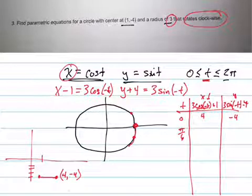So it's creating my circle to go clockwise instead of counterclockwise, which a positive t would have done.